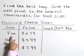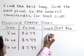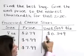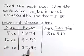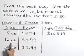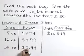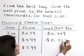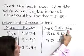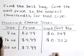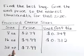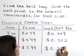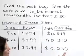$2.79 divided by 8 ounces is equal to $0.349. $4.99 divided by 16 ounces is equal to $0.312 — and again, that's dollars per ounce. These are unit costs. And $7.99 divided by 32 ounces gives $0.250 per ounce.